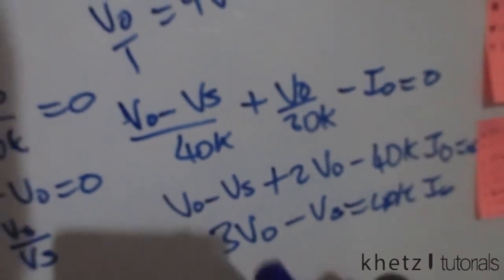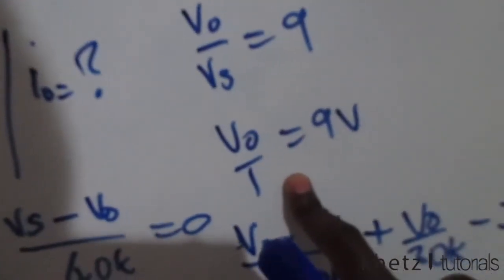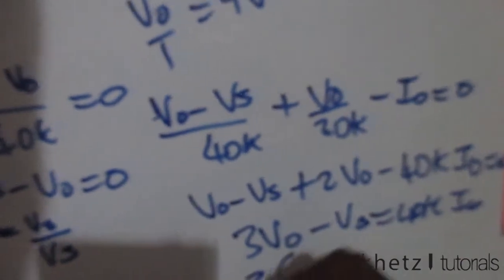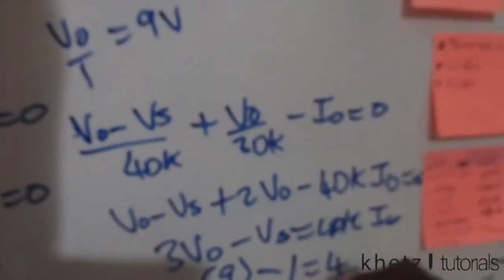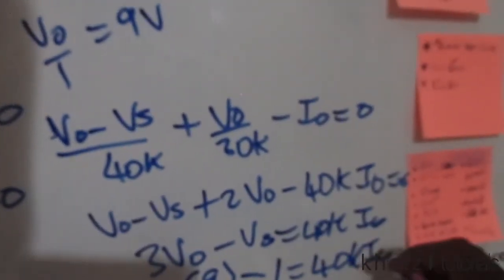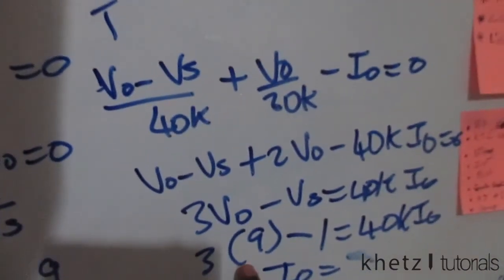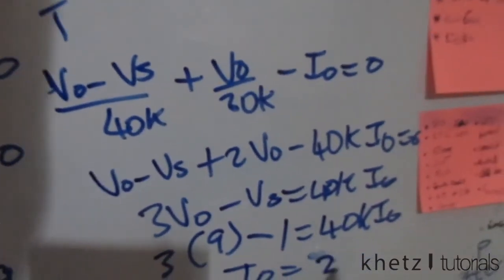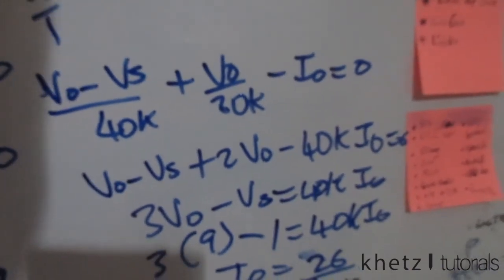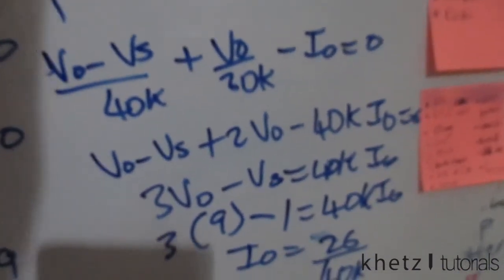Now we have the values of these two. We said vo was equal to 9, so 3 multiplied by 9 minus vs, which is 1, equals 40k io. Therefore, io equals 3 times 9 is 27 minus 1, which is 26, divided by 40k.